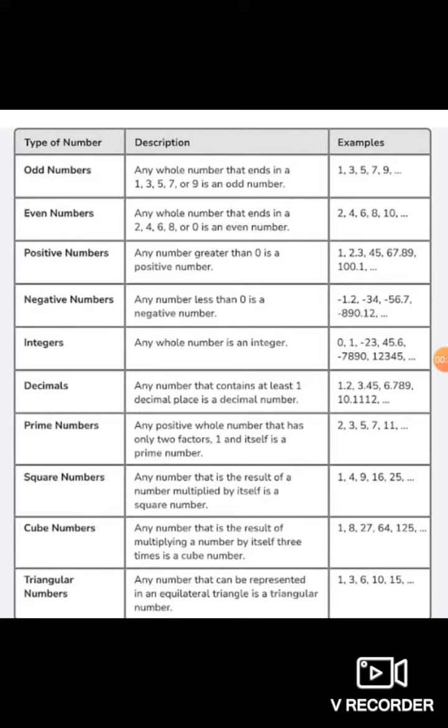Positive numbers. Any number which is greater than 0 is a positive number. Like 1, 2, 3, 4, 5, 6, 7, 8, 9, 100, 0.1.